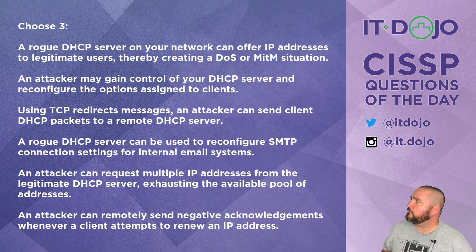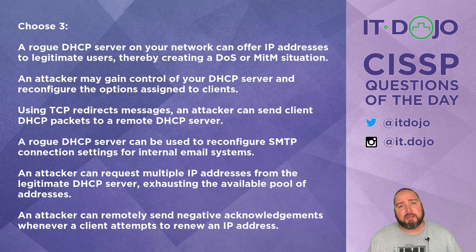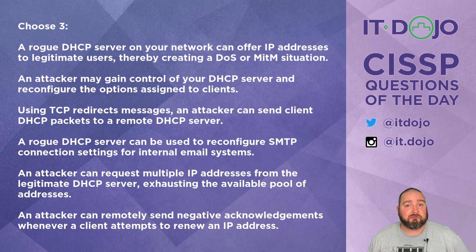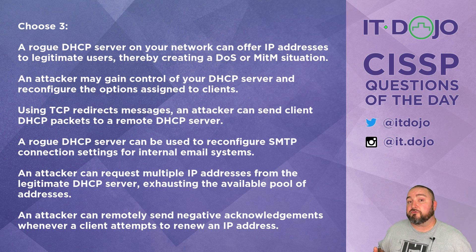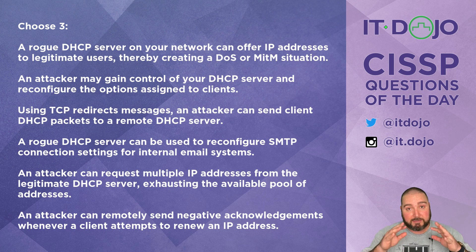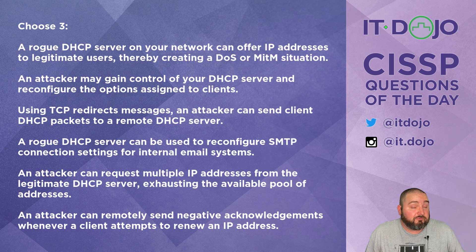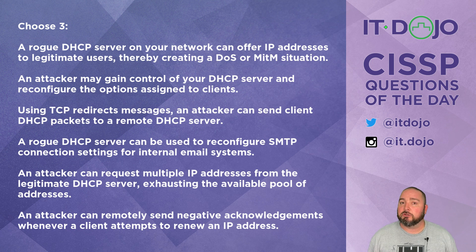The first option says a rogue DHCP server on your network can give out IP addresses, creating a man-in-the-middle or denial-of-service situation. That is absolutely a legitimate concern for your DHCP deployment, so it's not one of the answers we're looking for. The second option says an attacker can gain control of your DHCP server and manipulate the settings to give out different information to your users — that's also absolutely a concern, so it's not a correct answer either.